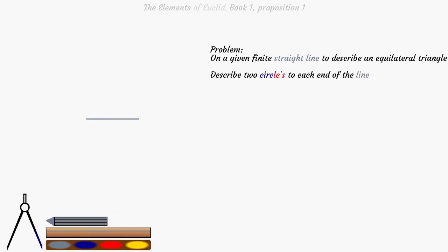Describe two circles to each end of the line with the radius of the line, postulate 3.